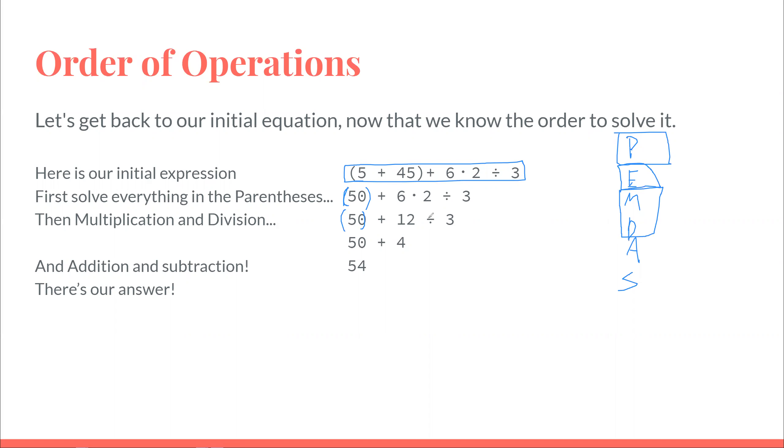Now, you would divide 12 divided by 3, which is 4. And then, since you already have the 50 here, now you can finally combine these two terms and get 54 as your final answer.